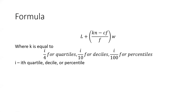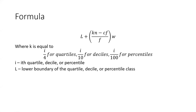i is the i-th quartile, decile, or percentile. Recall that i for quartile is from 1 to 3, for decile is from 1 to 9, and for percentile is from 1 to 99. L is the lower boundary for the quartile, decile, or percentile class.